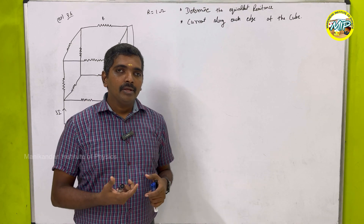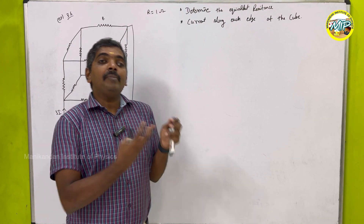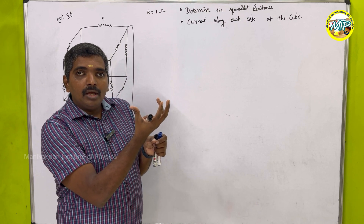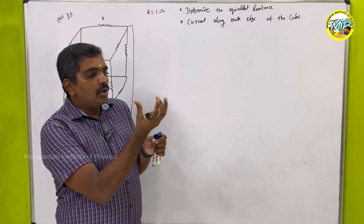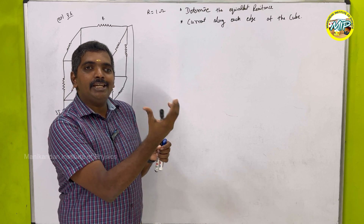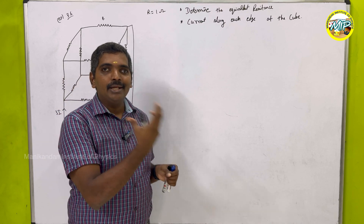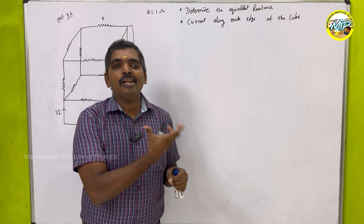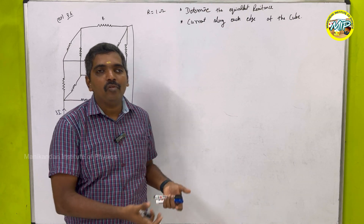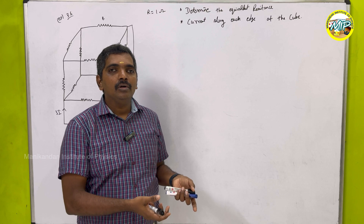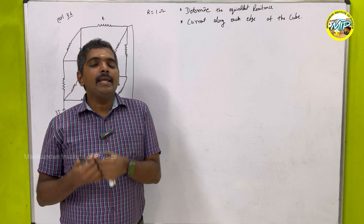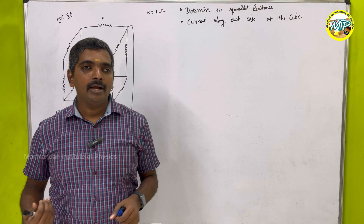Because of the symmetry of the cube — if you rotate the cube there is no change — that is called symmetry. Using this symmetry and Kirchhoff's loop rule, I am going to first find the equivalent resistance and then find the current.